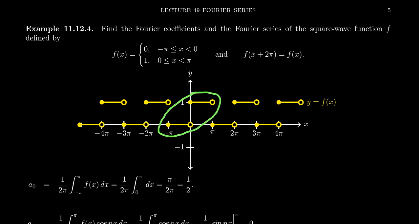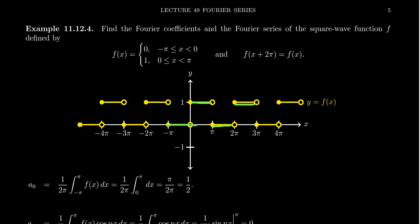When x is between negative π and 0 (where 0 is excluded), the function equals 0, so it sits on the x-axis. But between 0 and π, the function equals 1, so you see this jump. At 0 it equals 1; at π it jumps back down since the function is 2π periodic. Then it repeats itself over and over again.